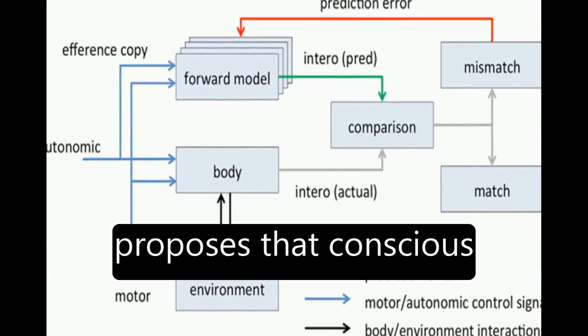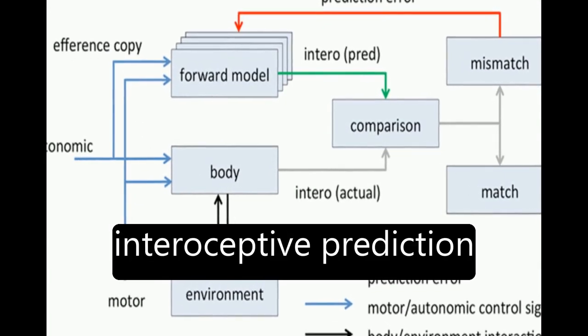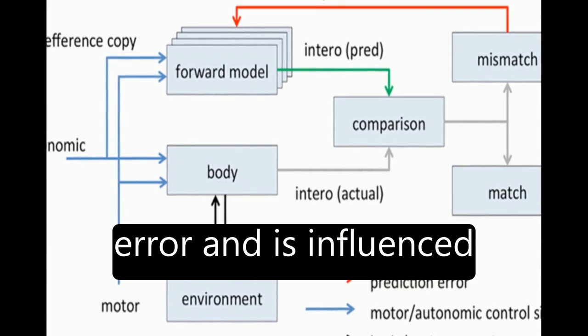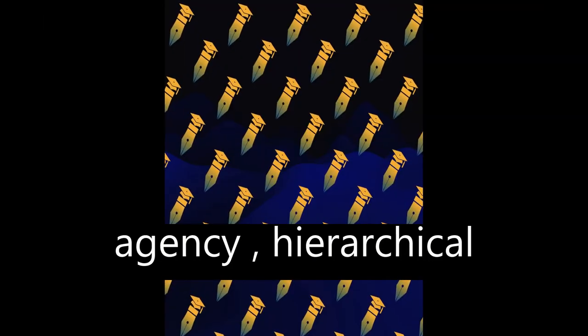The theoretical model proposes that conscious presence is based on interoceptive prediction error and is influenced by predictive models of agency.